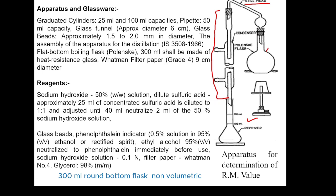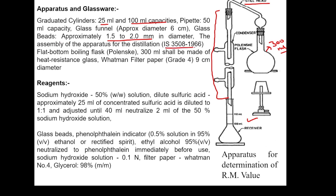The apparatus for the RM and Polenske value determination requires graduated cylinders of 25 ml and 100 ml capacity, a 50 ml glass funnel, Whatman number 4 filter paper, and glass beads approximately 1.5–2 mm in diameter to prevent bumping during distillation. The apparatus for total distillation is given by IS 3508:1966. The Polenske value flask of 300 ml must be made of heat-resistant glass.